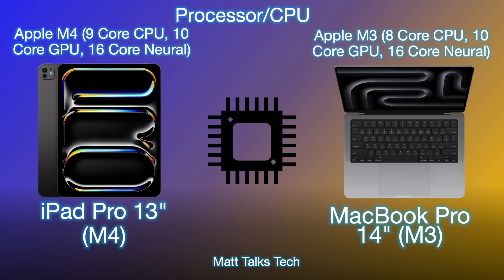Moving on to the processor: the base model M4 iPad Pro — with 256GB storage — has a 9-core CPU, 10-core GPU, and 16-core Neural Engine. The MacBook Pro 14-inch M3 comes with an 8-core CPU, 10-core GPU, and 16-core Neural Engine. The M4 iPad Pro shows a big performance leap over the M1 iPad Pro, but compared to the M3 MacBook Pro it's only a slight increase — roughly 20%.